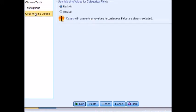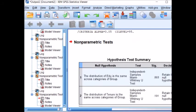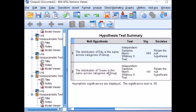Okay, now run. This is our result given by SPSS. The distribution of education is the same across categories of groups and the significance level is 0.893. Therefore, we will retain the null hypothesis and for second hypothesis, the distribution of tenure is the same across categories of groups and the significance level is 0.191. Therefore, we will retain the null hypothesis.